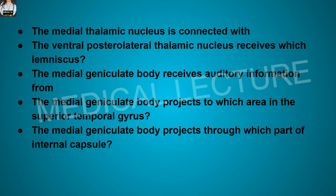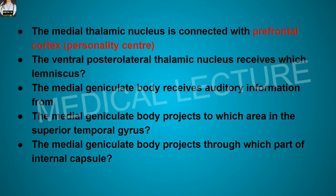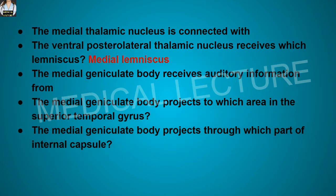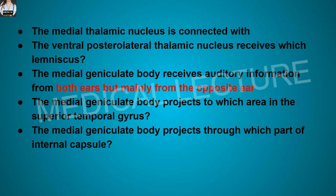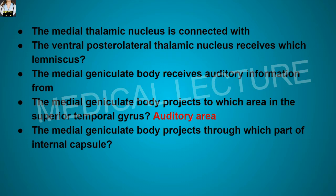The medial thalamic nucleus is connected with the prefrontal cortex, which is the personality center. The ventral posterior thalamic nucleus receives the medial lemniscus. The medial geniculate body receives auditory information from both ears but mainly from the opposite ear. The medial geniculate body projects to the auditory area in the superior temporal gyrus through the sublentiform part of the internal capsule.